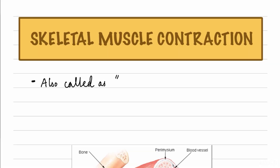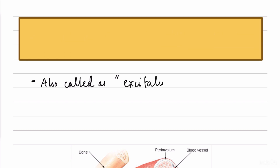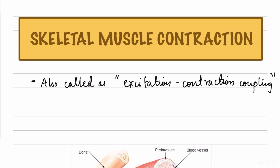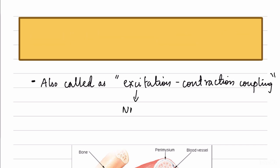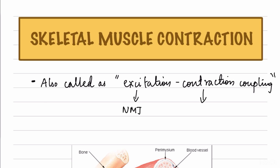Hi everyone. In today's video we'll be discussing skeletal muscle contraction, also known as excitation-contraction coupling. It is called so because it involves two processes: the first is excitation, which occurs at the level of the neuromuscular junction, followed by contraction.